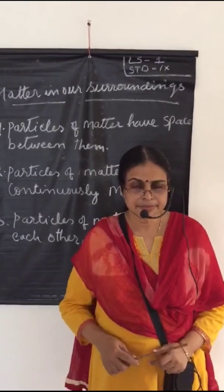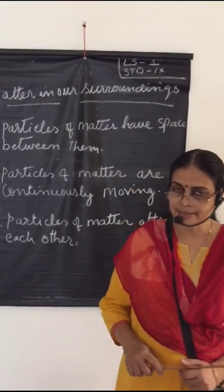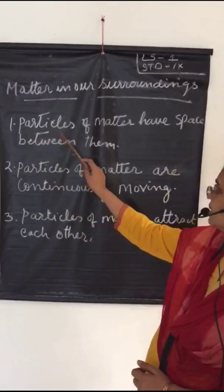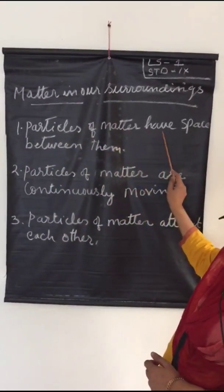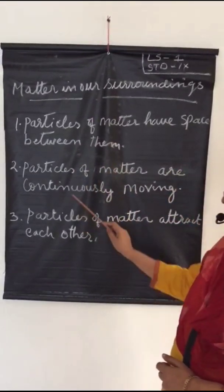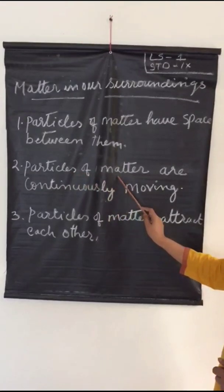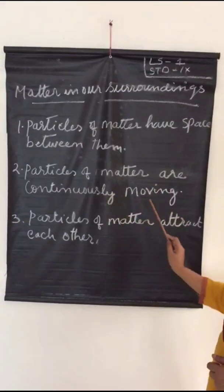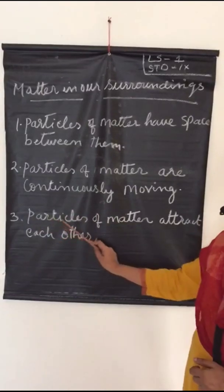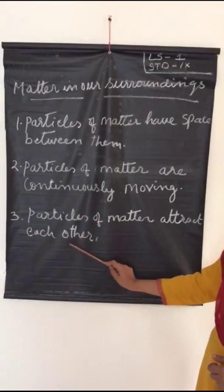There are a few characteristic features of matter. Let us discuss them one by one. First, particles of matter have space between them. Second, particles of matter are continuously moving. Third, particles of matter attract each other.